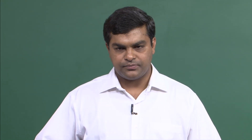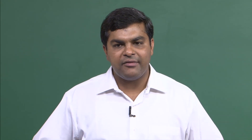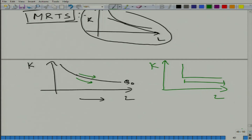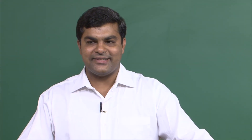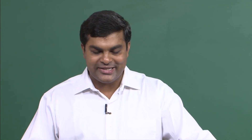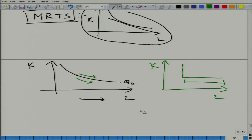What happens to the amount of capital that we need to decrease whenever we increase labor by one unit, staying on the same isoquant? Should it increase or decrease? It should decrease. This is what diminishing marginal rate of technical substitution says: as we keep increasing L on the same isoquant, the respective decrease in capital required to maintain the same level of production is decreasing — ΔK required decreases as we move in this direction.